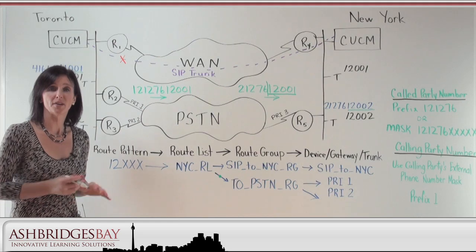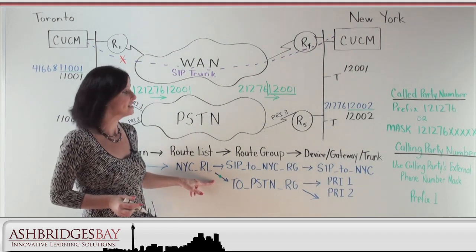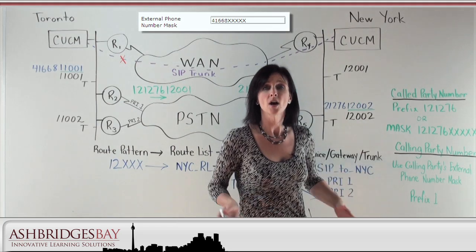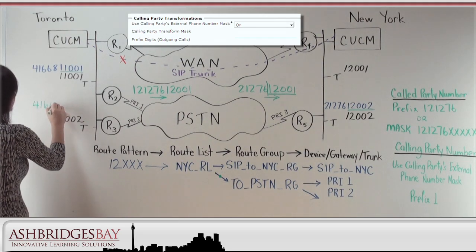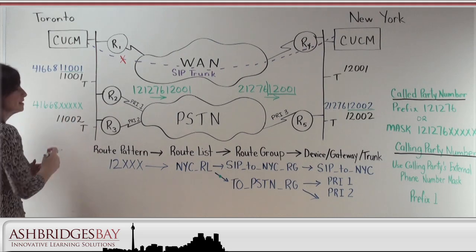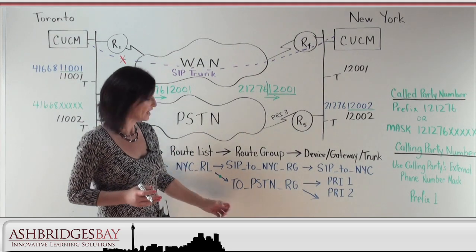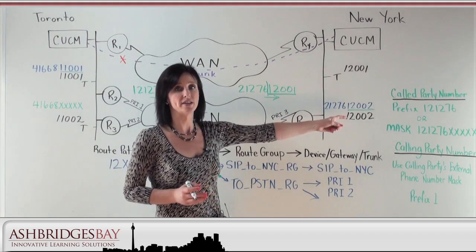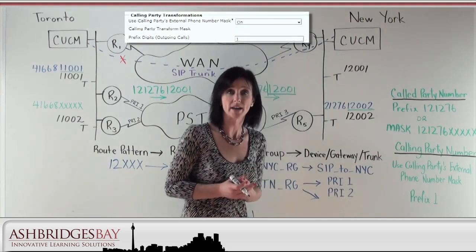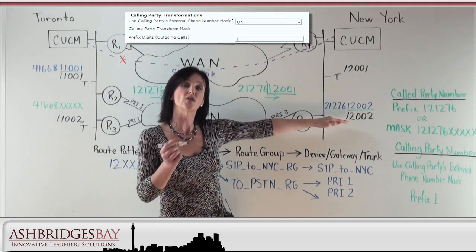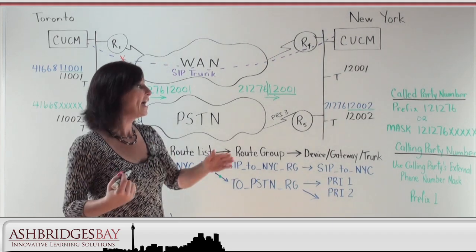Let's have a look at the calling party number. When we're changing the calling party number, we do something a little bit differently. We go into the call manager and use a drop-down box that says 'use calling party's external phone number mask.' When we configured each one of our lines, we added an external phone number mask of 4-1-6-6-8-X-X-X-X-X. So when I call from my 5-digit extension and my call ends up going through the PSTN, we add that mask and we have a 10-digit number that goes through to our New York office. We can also type in prefix 1 so that when the call goes to our New York office, we get a long distance number of 1-4-1-6-6-8-1-0-0-2 and they can simply return that call.